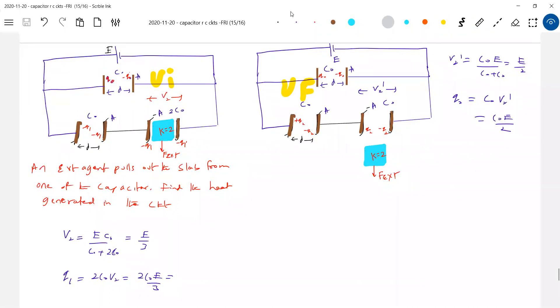Look at Q2 and Q1. Q1 was how much? 2C0 E by 3. What is 0.67, 0.5? So charge got decreased. So the flow of charge has to be shown like this, Delta Q.